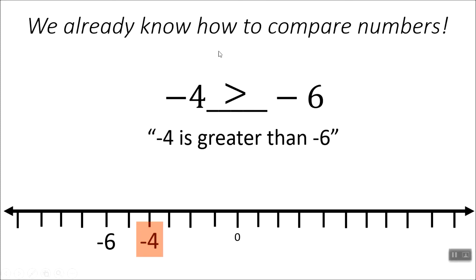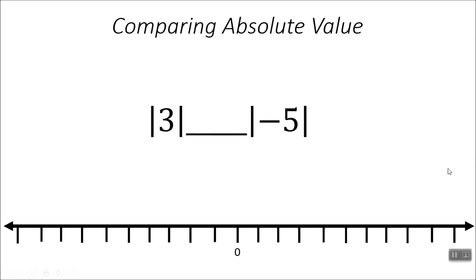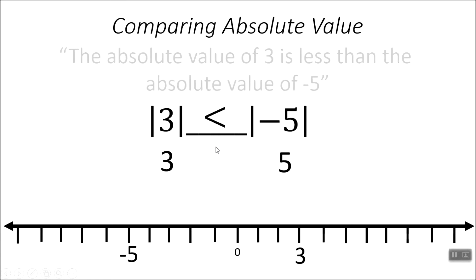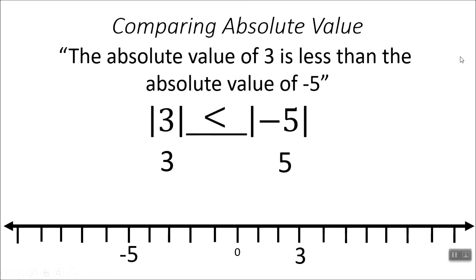If you're having trouble comparing those, get some extra practice with your teacher. Now we're going to deal with some absolute value. We have the absolute value of 3 and the absolute value of negative 5. I'm going to mark them both on the number line — putting my 3 and my negative 5. Now I'm going to measure their distances from 0. Negative 5 is 5 away from 0, and 3 is 3 away from 0. So 3 compared to 5 is going to be less than — I want to eat the 5. The absolute value of 3 is less than the absolute value of 5.